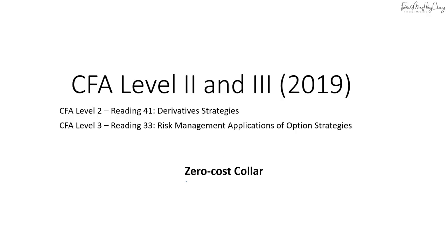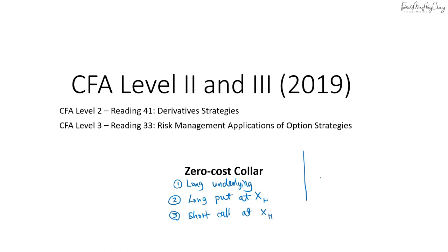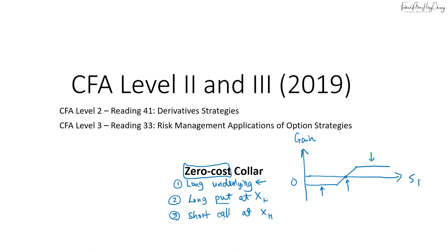For the zero-cost collar, this involves holding the underlying, so there will be a long underlying position, a long put at a lower strike, and a short call position at a higher strike price. The payoff diagram looks similar to a bull spread where you have a maximum profit, maximum loss, and a break-even price. The difference from a bull spread is that for the zero-cost collar we own the underlying. Zero cost means the premium for the put and call are the same, so they offset each other and the net cost is zero.